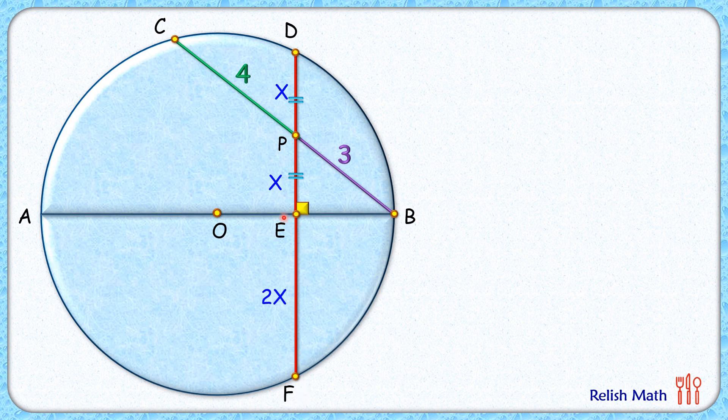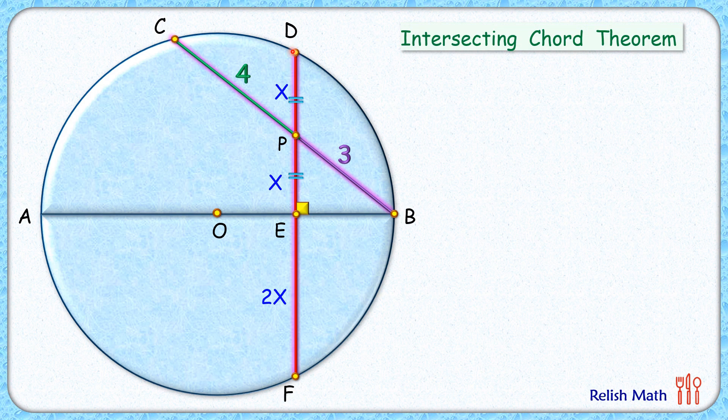Now if we see in this circle, we have chord DF which is intersecting the chord CB at point P. Applying intersecting chord theorem, we'll get DP times PF equals CP times PB. Now DP length is x cm, PF length is x plus 2x or 3x cm, CP is given as 4, and PB is given as 3.